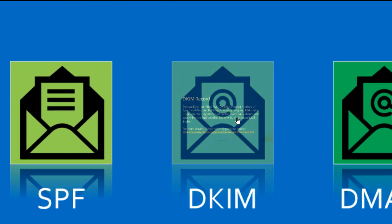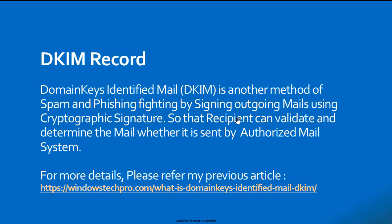DKIM — Domain Keys Identified Mail, simply called DKIM — is a second method to protect your domain mails from spam and phishing attacks. In SPF, we don't do any modifications to the mail itself; all actions are done by the recipient servers after validation.